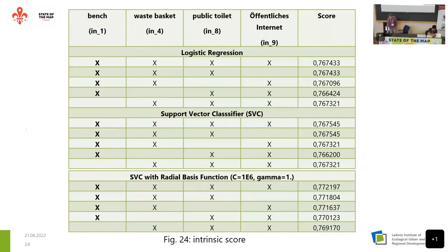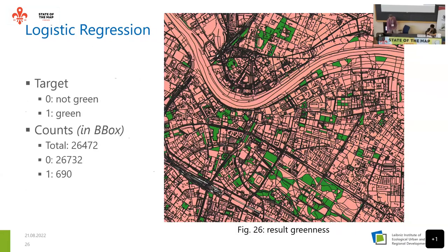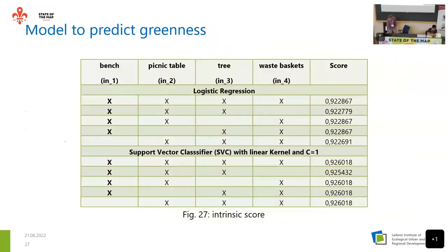For predicting greenness, I used a similar but different selection of POIs — benches, picnic tables, trees, and wastebaskets — and cadastral land use reference data from Germany. I labeled forest, scraps, cemetery, sport, leisure, and recreation area categories as green. Applying the same procedure, the greenness module showed a better intrinsic score than the accessibility module when applied to the generated polygons.